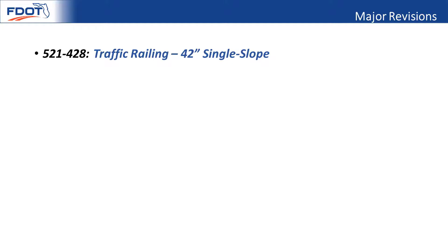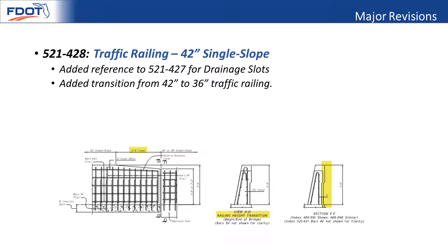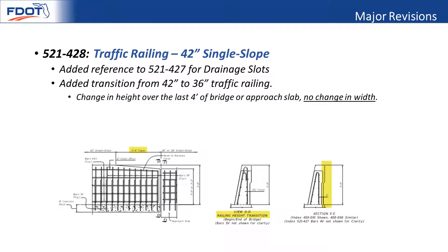We also added the drainage slots to the 42-inch single slopes and added a height transition from the 42-inch single slopes to the 36/38. The detailed transition is only applicable at the beginning or end of the bridge, the approach slab, or a retaining wall. The detail first reduces the height only over a length of four feet, so that those larger S-bars don't need to be bent in from the back, which is a field maneuver and is difficult to do.